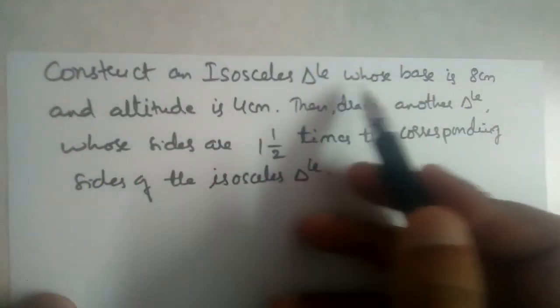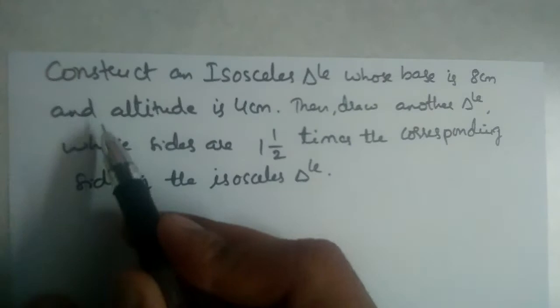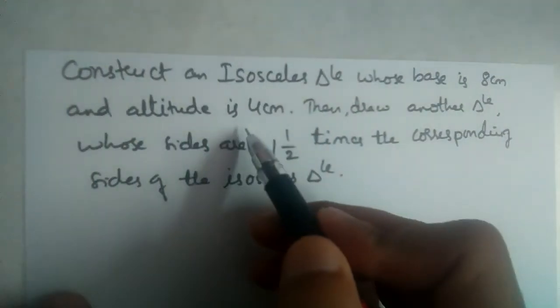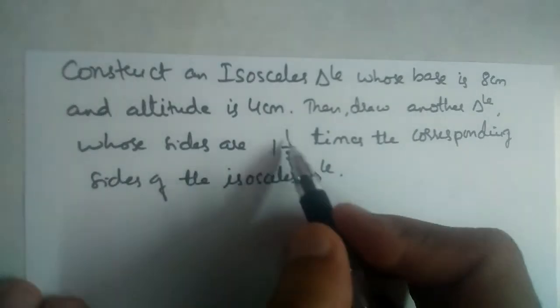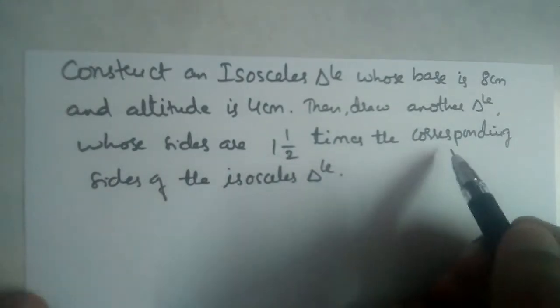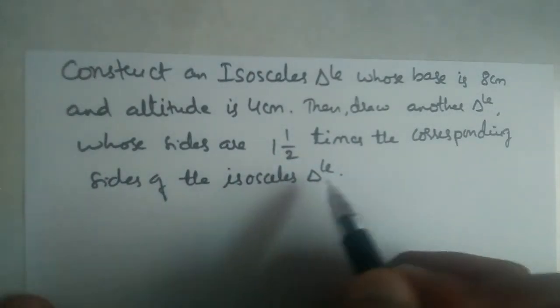Construct an isosceles triangle whose base is 8 cm and altitude is 4 cm. Then draw another triangle whose sides are 1 and 1/2 times the corresponding sides of the isosceles triangle.